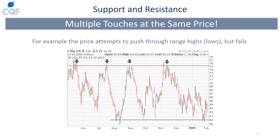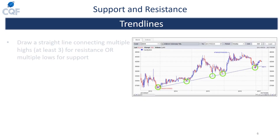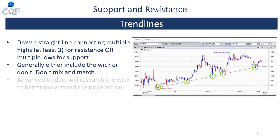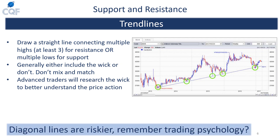A diagonal line is a general trend line where you plot multiple higher highs, higher lows, or lower lows together into a straight diagonal line. In the chart on screen you can see multiple higher lows linked together, and you can see the price certainly respected this line. However, remember trading psychology — the more complex the methodology, the fewer new traders will know about it and the less likely it will be respected.